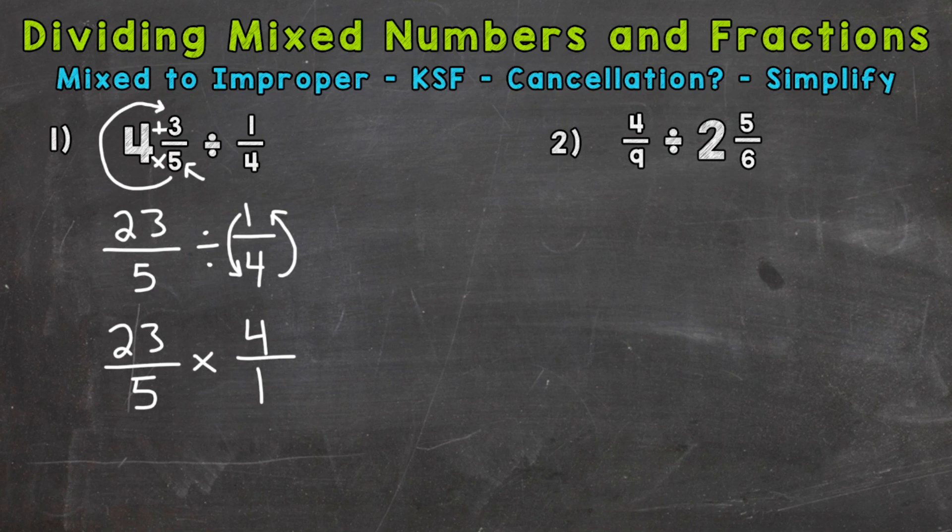The only common factor is one, so we cannot use cancellation here. So we are ready to multiply straight across. 23 times 4 is going to give us 92, and 5 times 1 is 5.